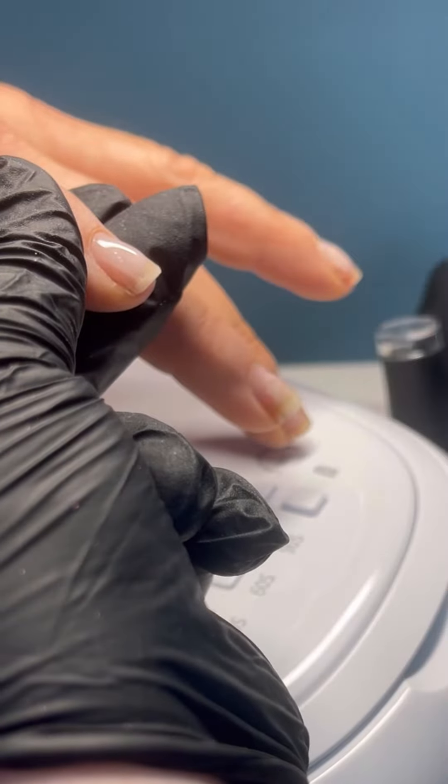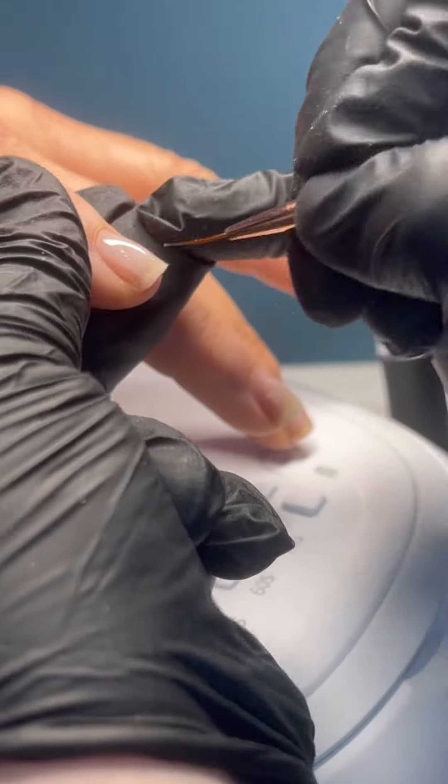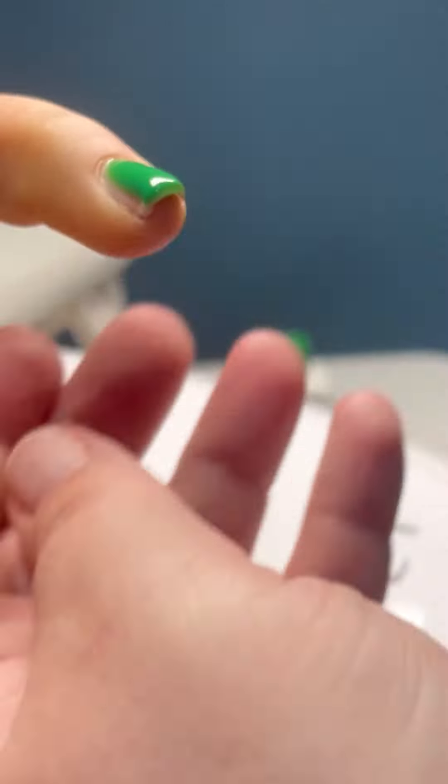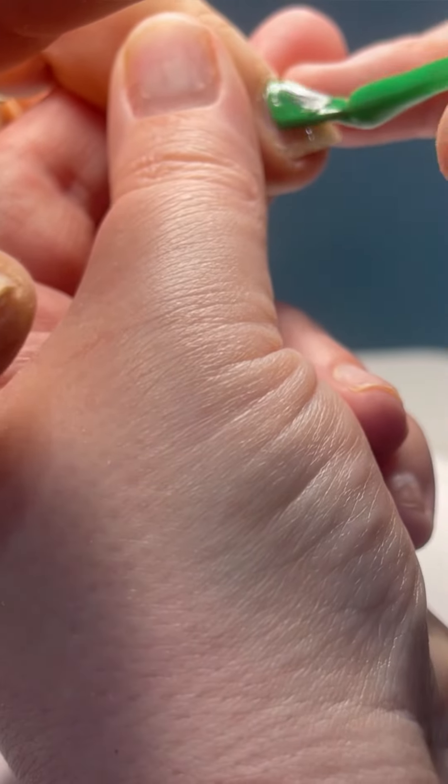So then I'll use my liner brush and I'll just get the shape. And using the liner brush, I do one nail at a time. Once I've done that, I'll shape them, I'll cure them.